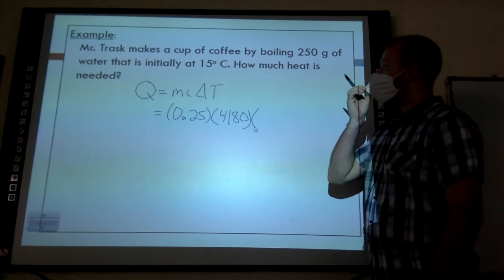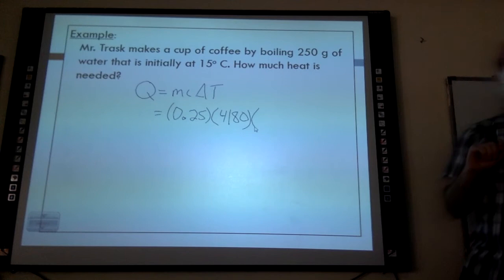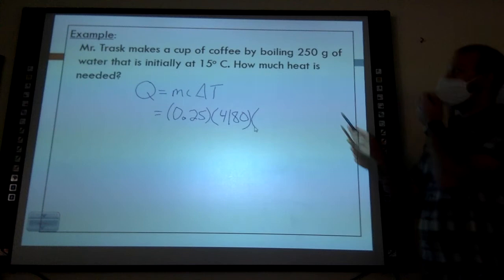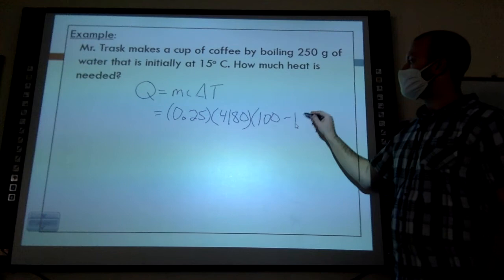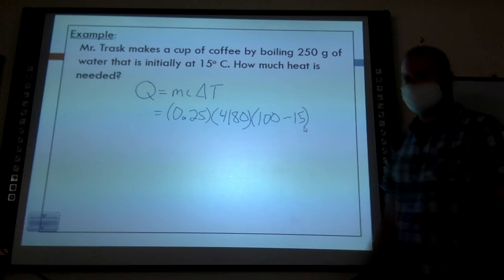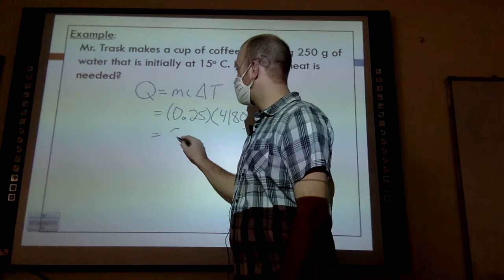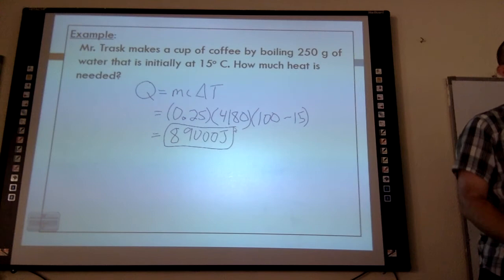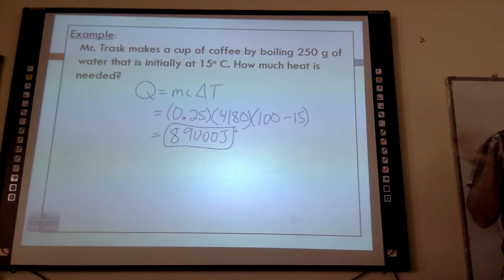Notice it's change in temperature, not just temperature. This is why you need to know the boiling point of water — if I'm going to boil it, my final temperature is 100°C and my initial is 15°C, so ∆T = 85°C. Calculate this and you'll get approximately 89,000 joules. The key trick: use change in temperature, not just temperature — if there's no change, there's no heat.